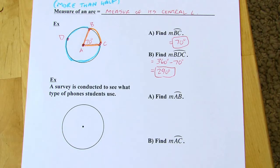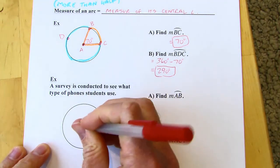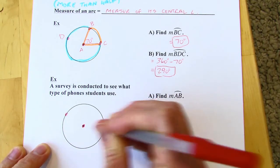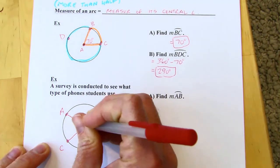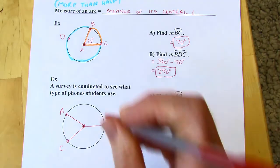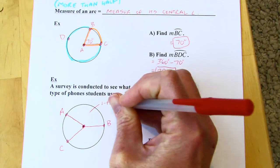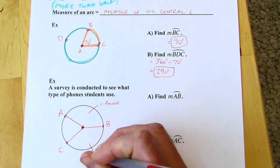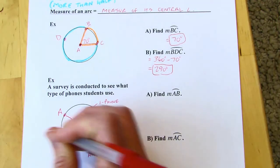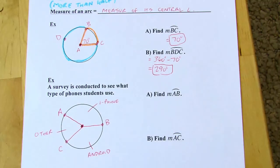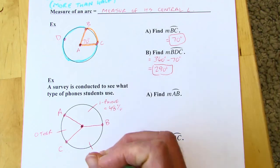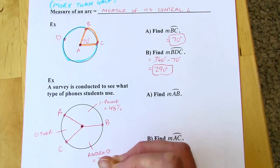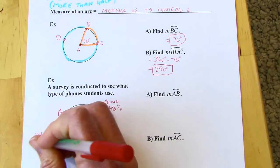This next example, a survey is conducted to see what type of phones students use. So I'm going to cut this into a pie chart. So I'm going to put points A, B, and C, just kind of spread out. And then I'm going to connect each one of those points to the center, something like this. And let's say that this represents iPhone. This can be Android down here. And this can be other. I don't even know what the other would be. Flip phone or something. So let's say that the results came back in that 48% of the students use an iPhone. 32% use Android. And that would leave 20% in the last category.